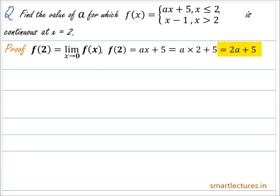Now let's find the limit of the given function at x = 2. If you look carefully at the definition of this function, you can see that the value of f(x) when x is less than 2 and when x is greater than 2 are not the same. So to calculate the limit at x = 2, we need to find both the left-hand limit and the right-hand limit.